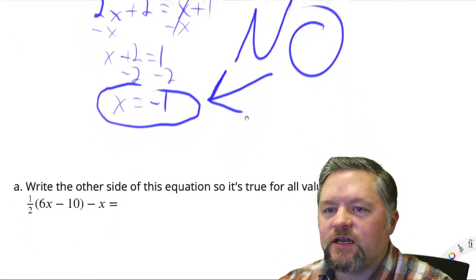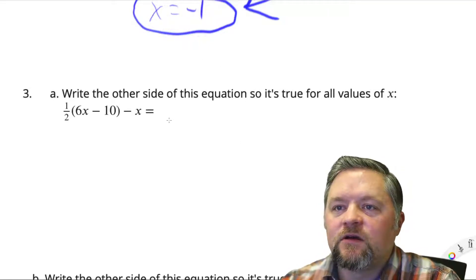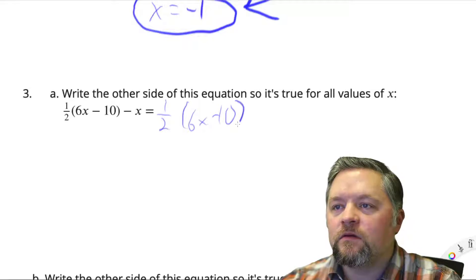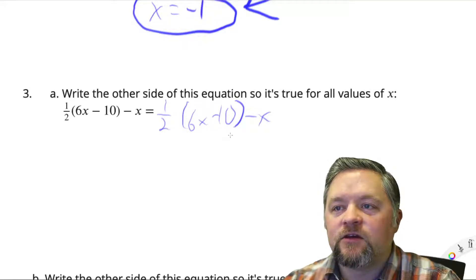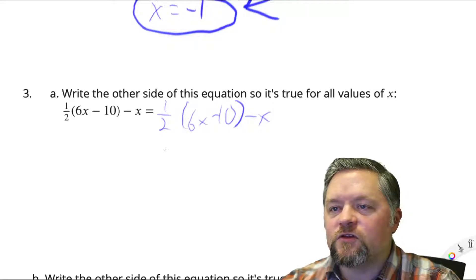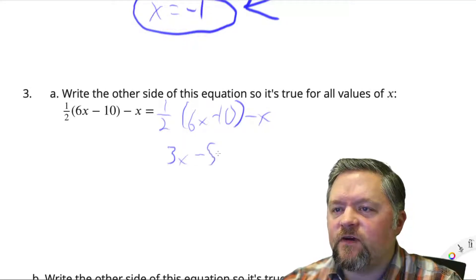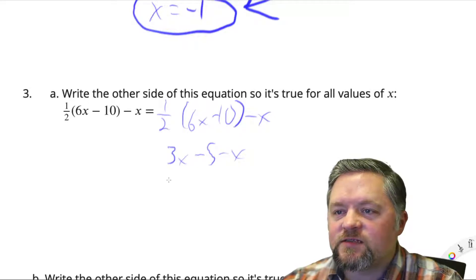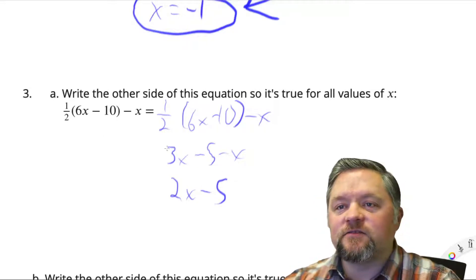Write the other side of the equation so it's true for all values of x. Well, for it to be true for all values, each side of the equation needs to be identical. So you could have the exact same thing. Each side's identical now. Is it true for all values? Yes. You could also do some simplifying to this. Like, you could distribute that. Half times 6x is 3x, half of negative 10 is negative 5 minus x. You could combine terms. 3x take away x is 2x subtract 5. Any of those will work. Anything that is identical to the other side will work.